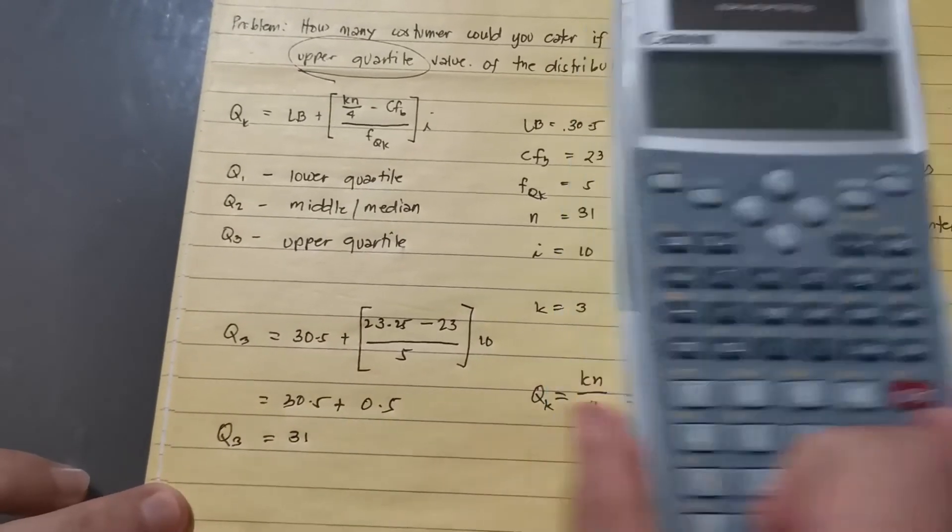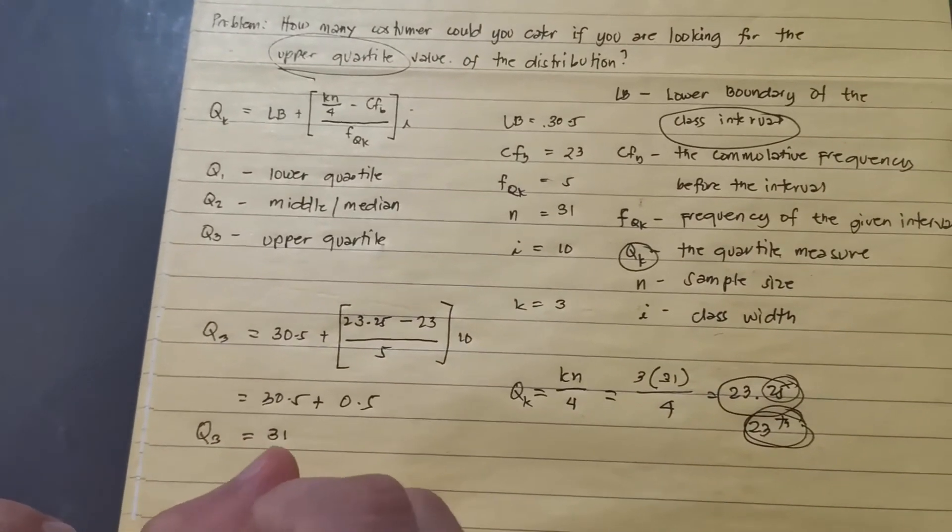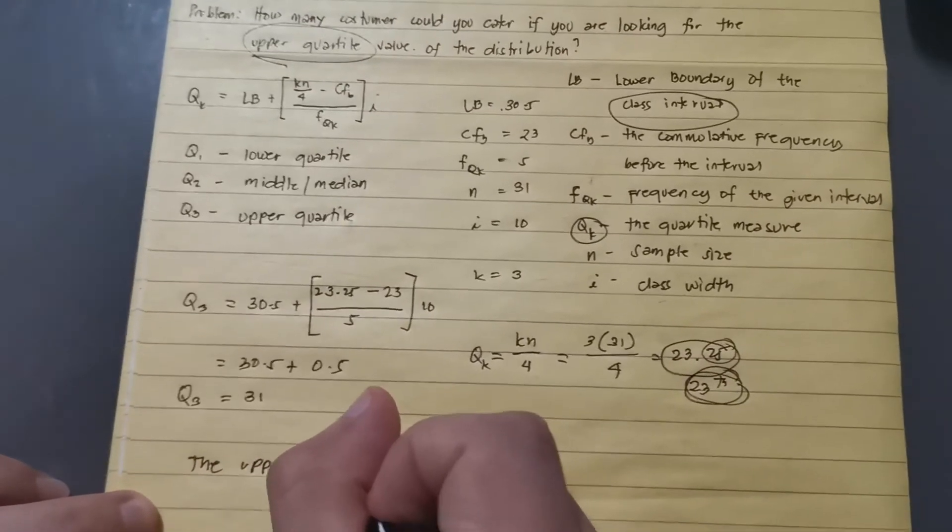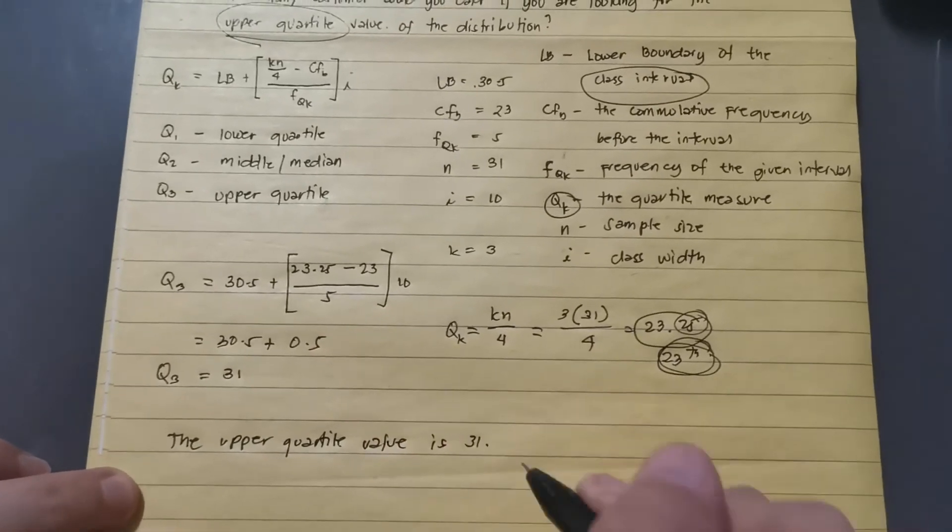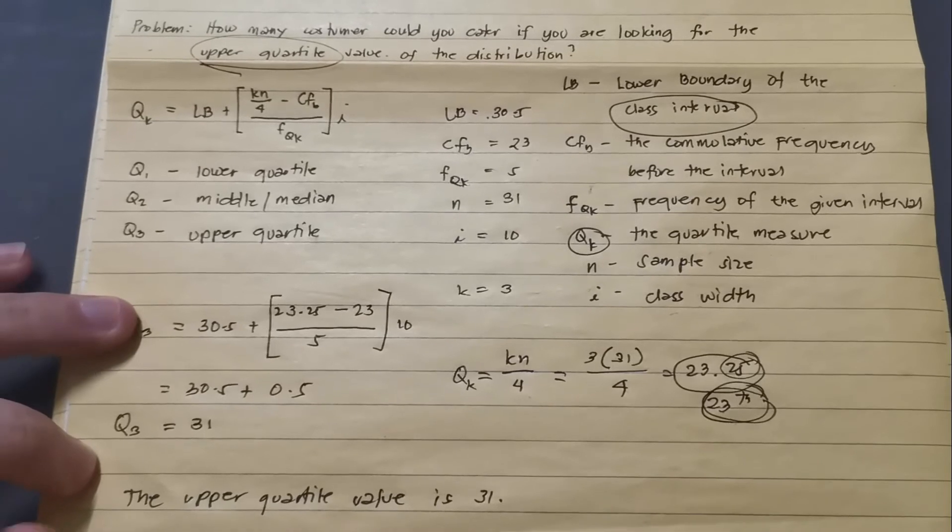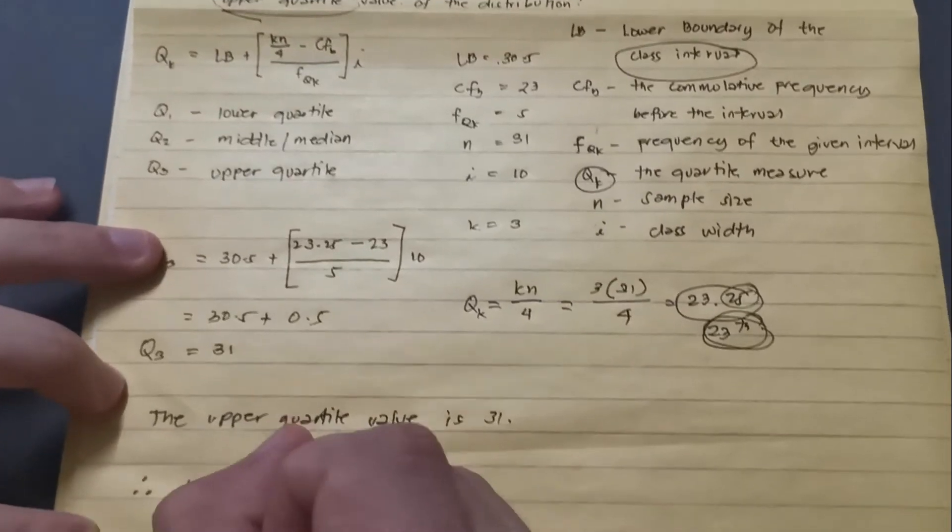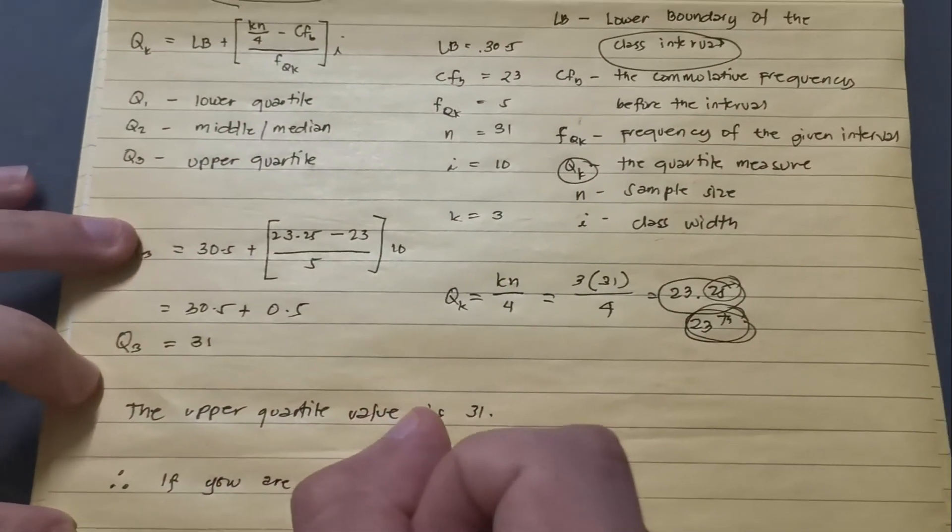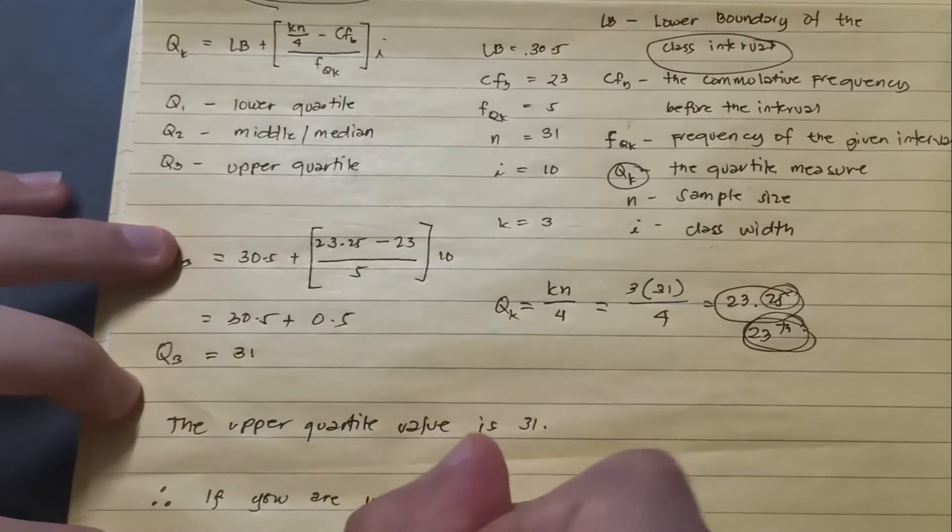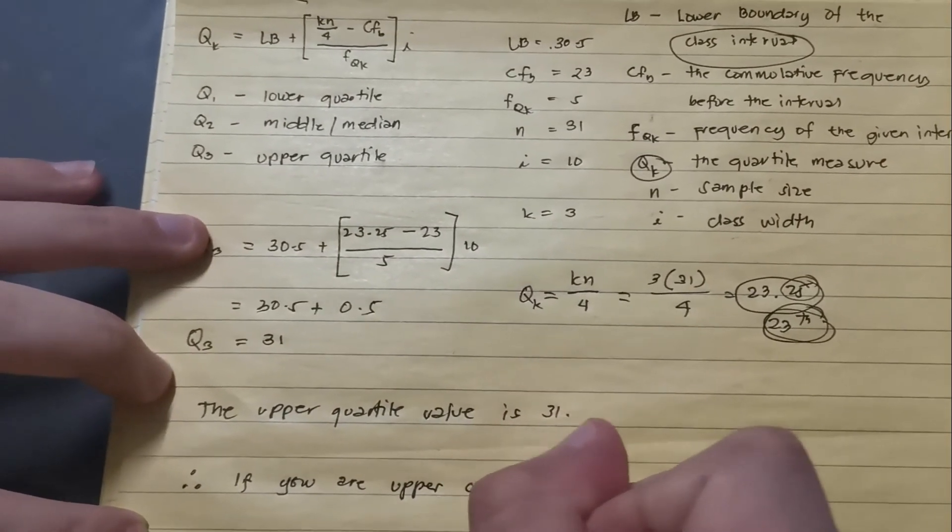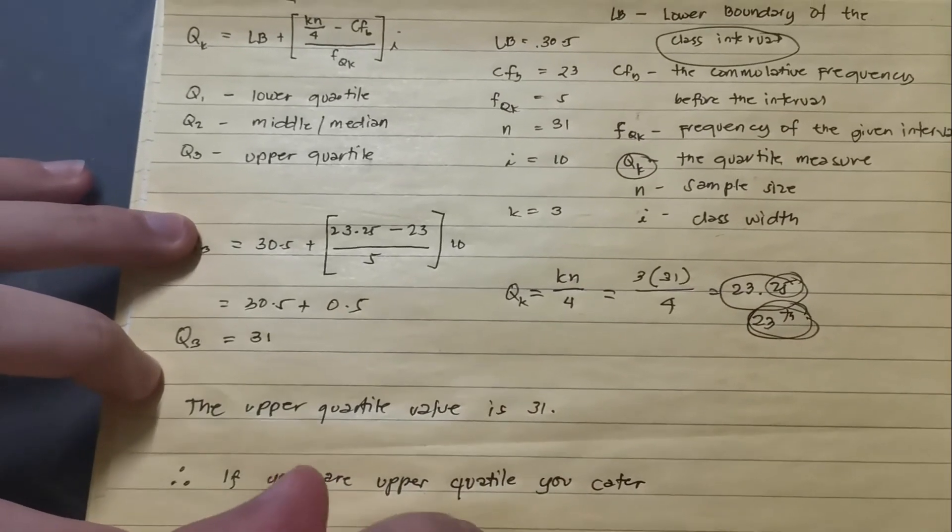In other words, in this problem, the upper quartile value is 31. We can now conclude that if you are in the upper quartile, you can cater 31 customers.